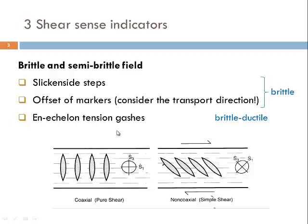En échelon tension gashes are a characteristic shear sense indicator for the semi-brittle field, for the brittle-ductile transition, because their evolution has components of both brittle and ductile failure. Such tension gashes occur in shear zones that have some ductility — the plasticity of the rock is higher than in purely faulted areas, but fractures still form.